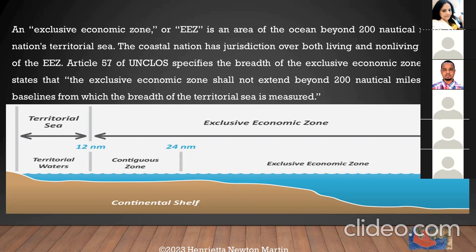From the diagram you can see the territorial sea at 12 nautical miles from a country's coastal baseline, the contiguous zone at 24 nautical miles, and the Exclusive Economic Zone extending to 200 nautical miles from the baseline. The EEZ is a very prominent zone for fishing, extraction of minerals, mining, and so on. This diagram clearly shows the demarcations.